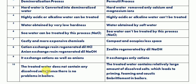The treated water from the ion exchange process does not contain any dissolved salts, so there are no problems in boilers when used as boiler feed water. But in the zeolite process, the treated water contains a relatively large amount of dissolved salts, which leads to priming, foaming, and caustic embrittlement in boilers.